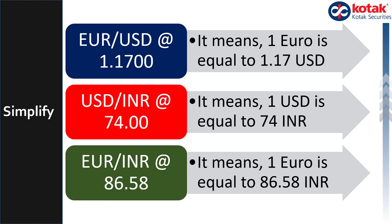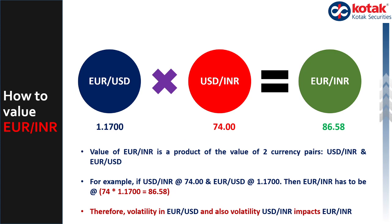They basically mean that whatever comes first in the symbol is always 1. How is the value of Euro INR derived? This is very important — it's simple arithmetic. It is a multiplication of two currencies: Euro dollar and dollar rupee. There is no other currency involved here.